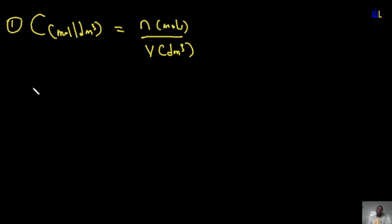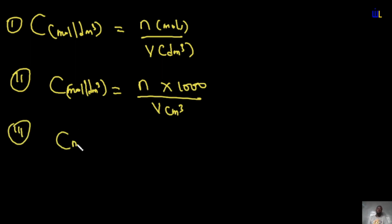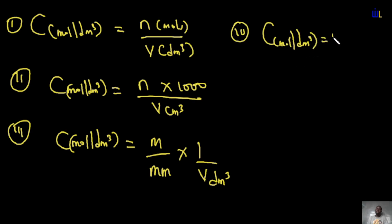The second formula is used when volume is given in cm³: C (mol/dm³) = number of moles × 1000 ÷ volume in cm³. The third formula applies when the amount is given as mass rather than moles: C = (mass ÷ molar mass) × (1 ÷ volume in dm³). The fourth formula combines mass with volume in cm³: C (mol/dm³) = (mass ÷ molar mass) × 1000 ÷ volume in cm³.